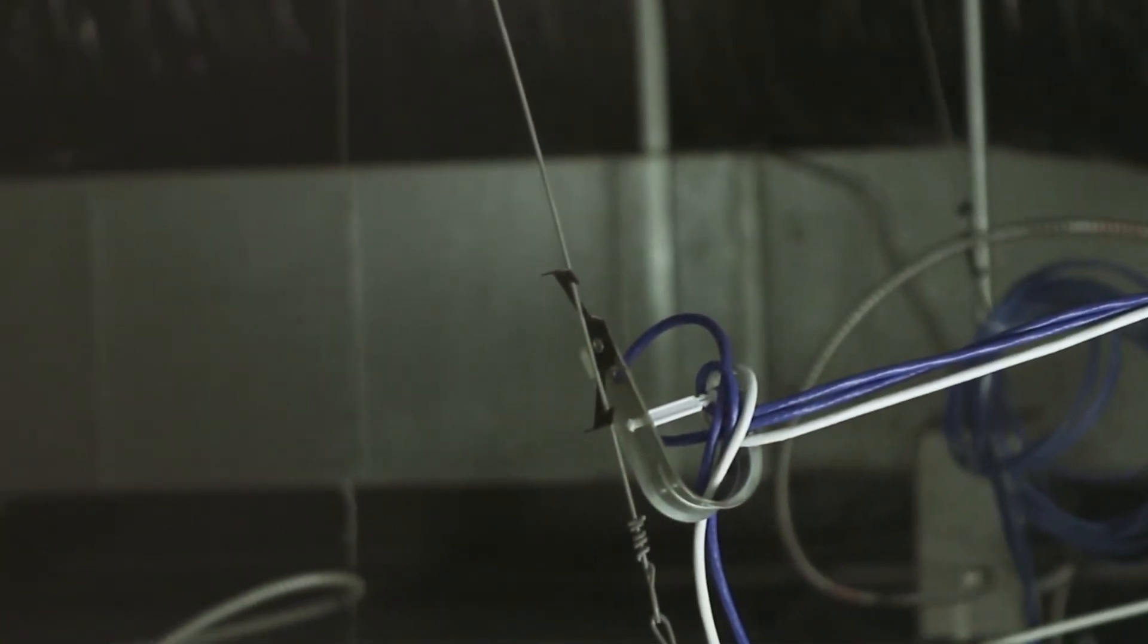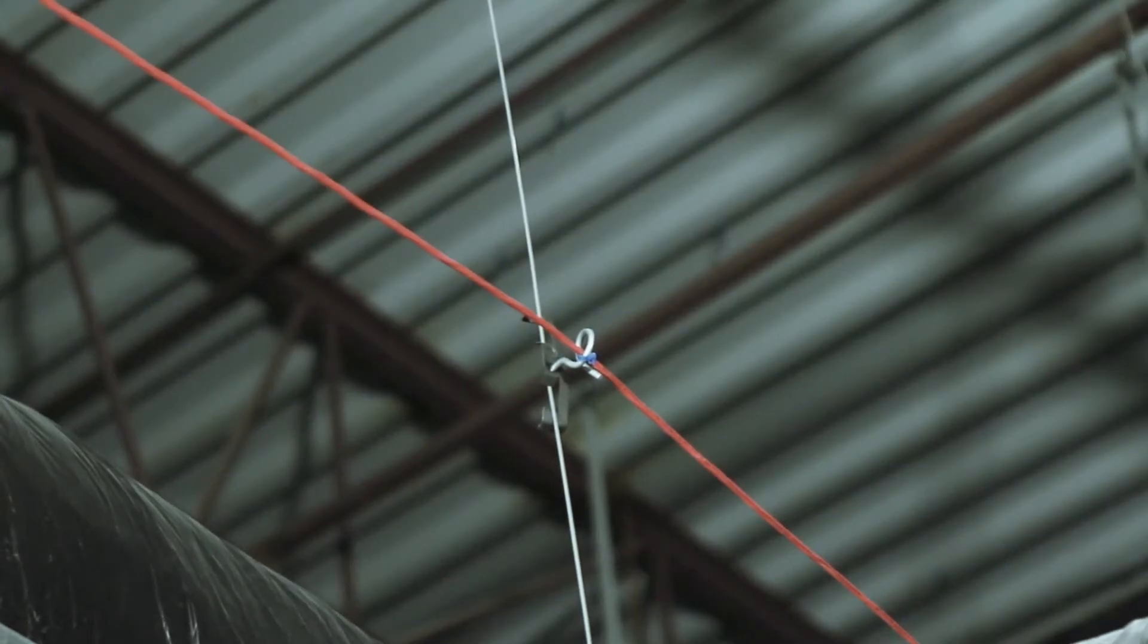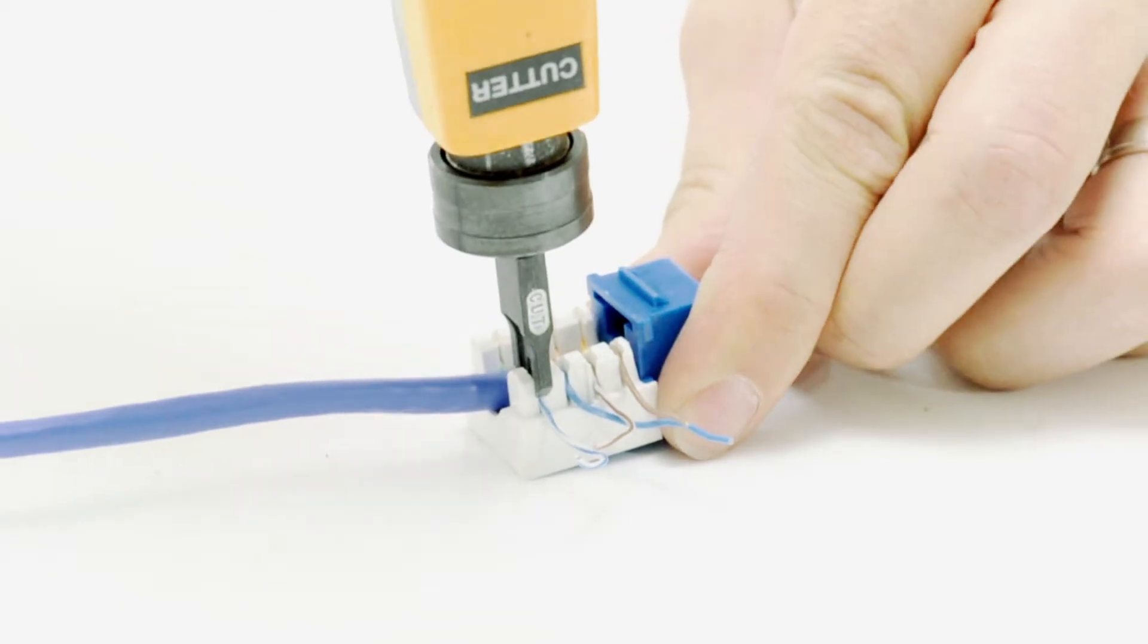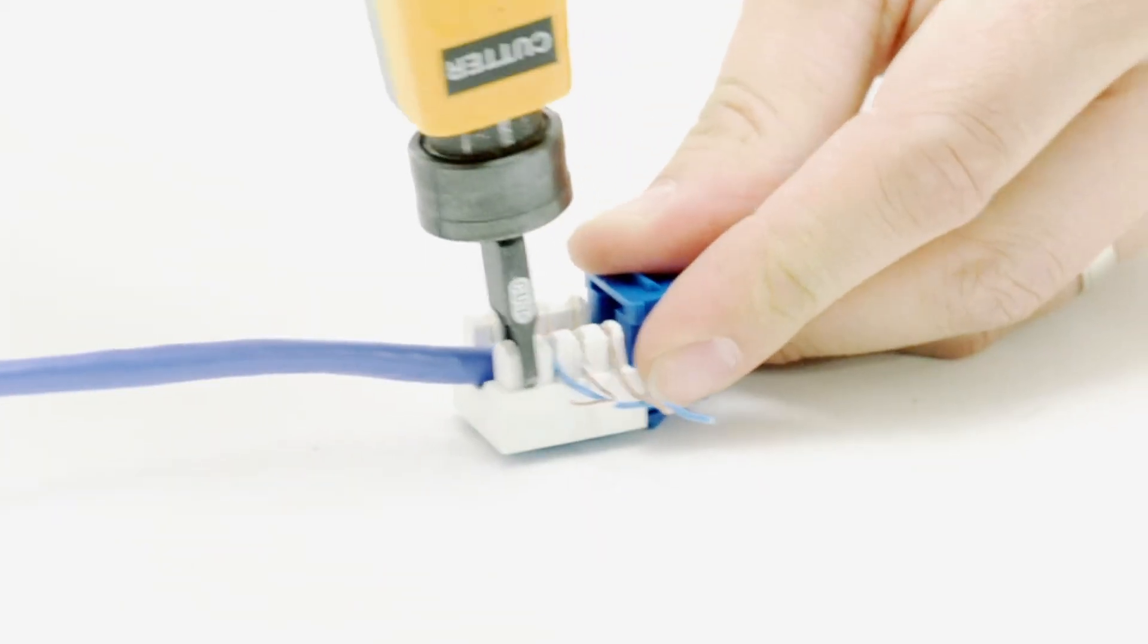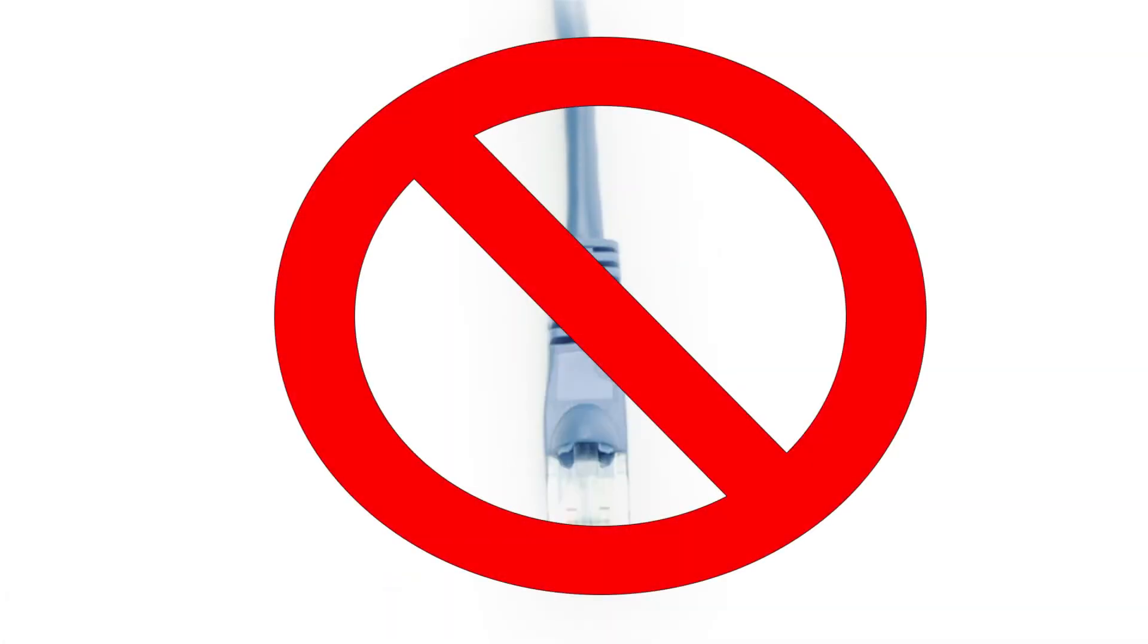Choose solid CAT6 for structured cabling projects that require plenum rated cable, which include running cables through drop ceiling, return air space, or any above ceiling air circulation spaces. Unlike stranded cable, solid CAT6 can be punched down to jacks or patch panels. It is not recommended to be used as a patch cable.